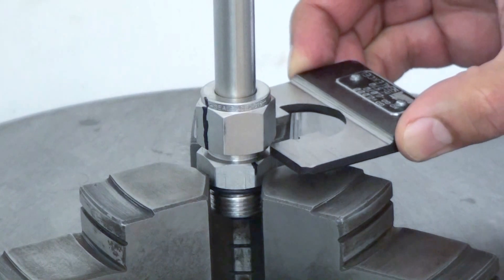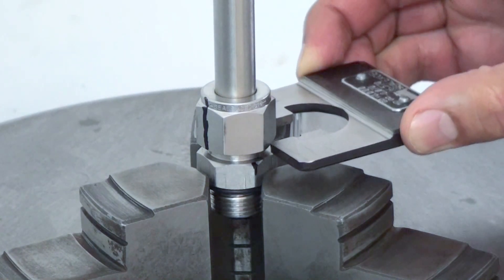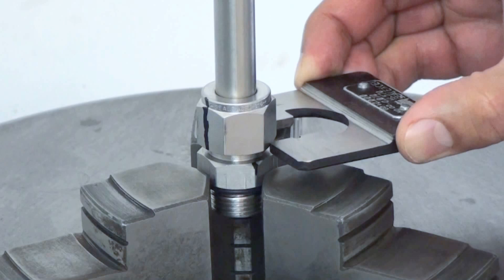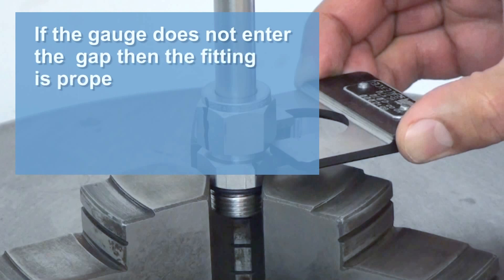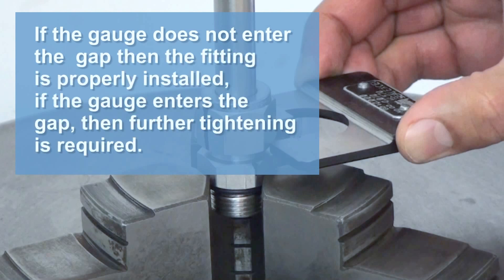Step 4. Use the Gap Inspection Gauge to check if the nut has been sufficiently tightened. To do this, position the gauge next to the body. If the gauge does not enter the gap, then the fitting is properly installed.